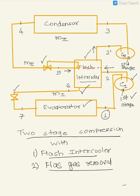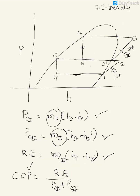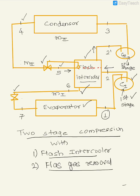You need to be very clear as to how this flash intercooler helps in flash gas removal. Look at state 4 to 5 — this is an expansion in a throttling device, and at state 5, flash gases are generated. These flash gases do not play any role in the refrigerating effect, and it is good that they are removed. This removal is achieved by making use of the flash intercooler.